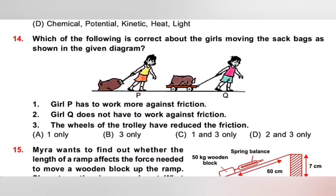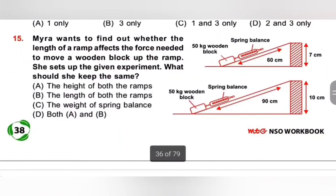Fifteenth one: Myra wants to find out whether the length of ramp affects the force needed to move a wooden block up the ramp. What should she keep the same? A: The height of both ramps. B: The length of both ramps. C: The weight of spring balance. D: Both A and B. To conduct a fair experiment, she needs to keep the height of both ramps the same. Option A is the correct answer.